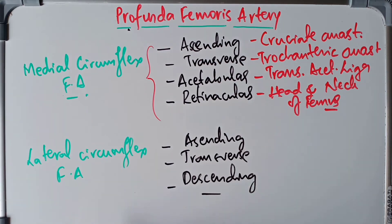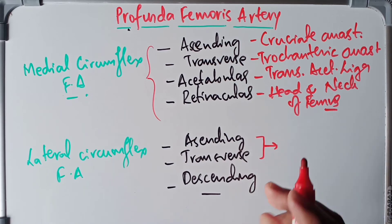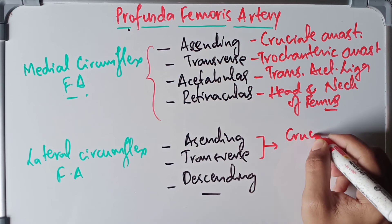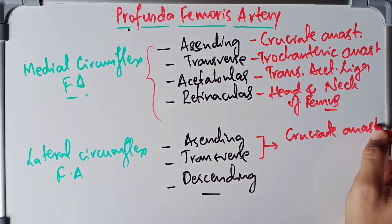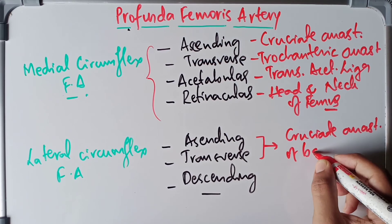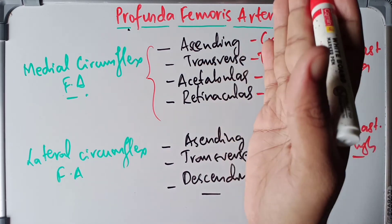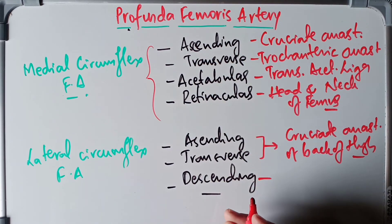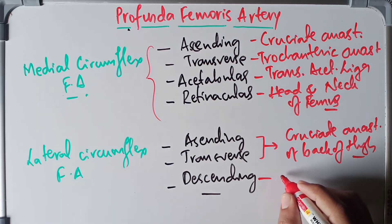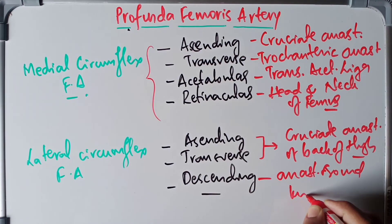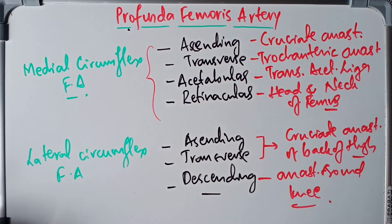For the lateral circumflex femoral artery: the ascending and transverse branches form the cruciate anastomosis on the back of the thigh. The descending branch passes anterior to the border of vastus lateralis and continues to form anastomosis around the knee.